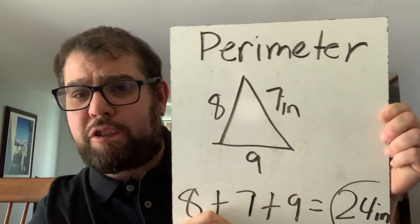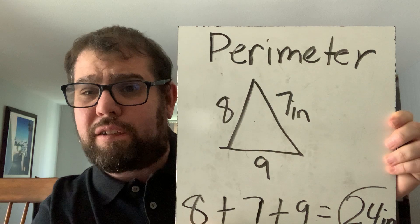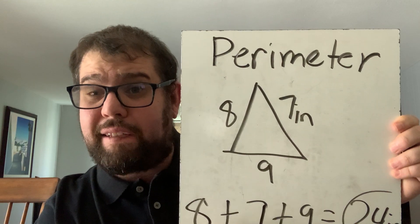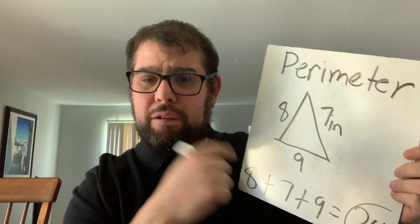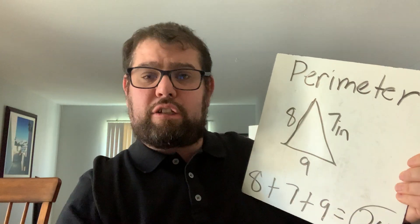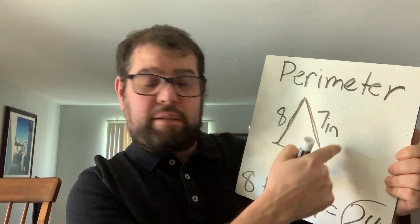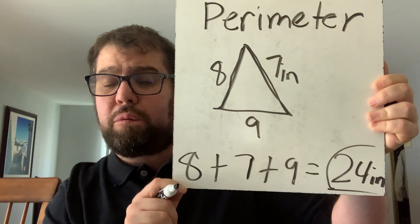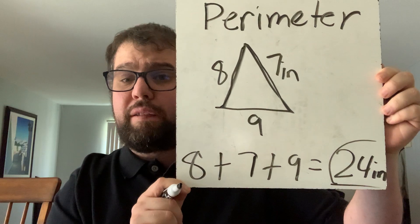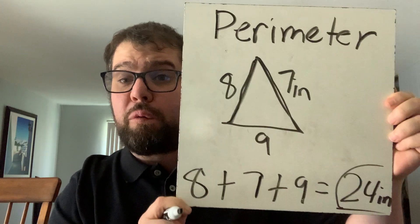So I've got my first board: perimeter of a triangle. The triangle has three sides — eight, seven, and nine. One tip: if you're having trouble, take a pen, draw along the sides, and note which side you just went over. Eight plus seven plus nine — put it into a calculator — equals 24 inches. Don't forget to label!